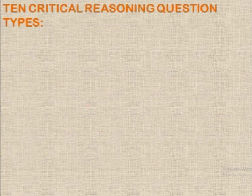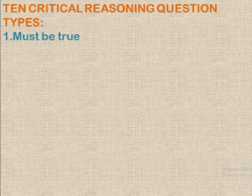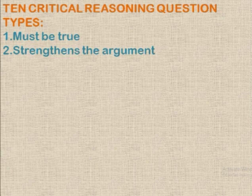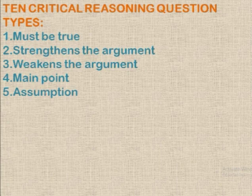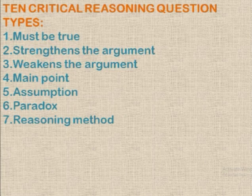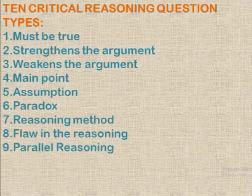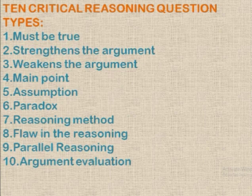There are ten critical reasoning question types. They can be a 'must be true' question type, or they might ask which of the following strengthens or weakens the argument, what was the main point in the text, what was the underlying assumption behind the text, what's the paradox, what reasoning method was used, what flaw in the reasoning can be seen, what parallel reasoning can be used, or how the argument can be evaluated.